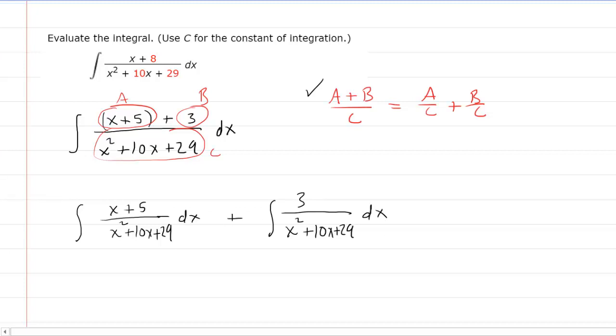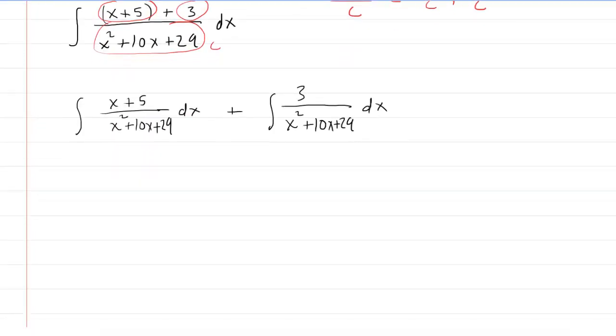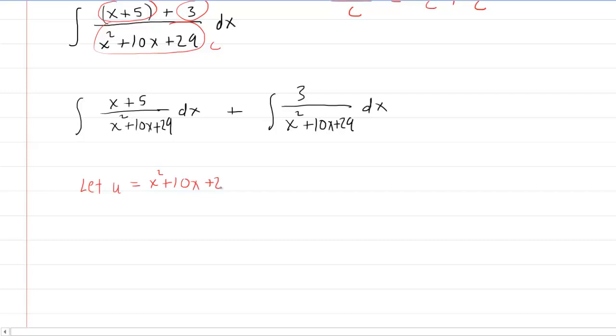So we're going to evaluate these two integrals, and it turns out that the first one is a basic u substitution. So if we let u equal the denominator, x squared plus 10x plus 29, and then if we differentiate both sides with respect to x, the derivative on the right side would be 2x plus 10, and then I like to solve for dx. So I would divide both sides by 2x plus 10, and then I have the equation solved for dx.